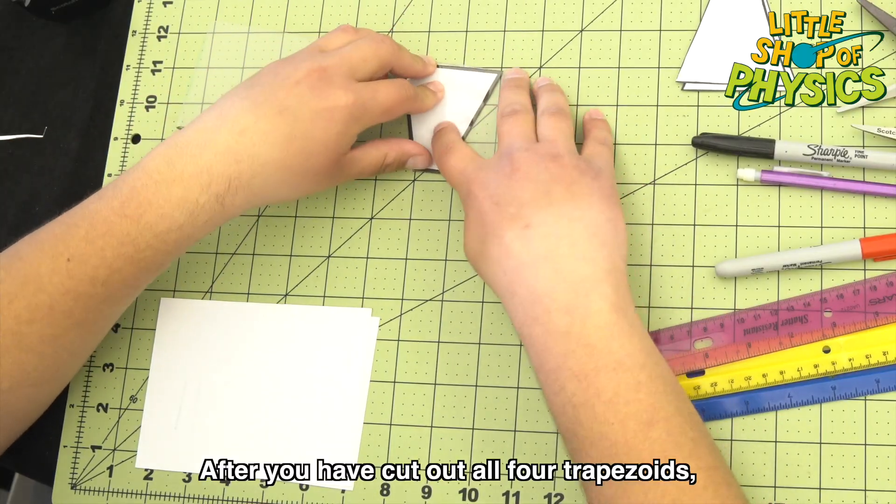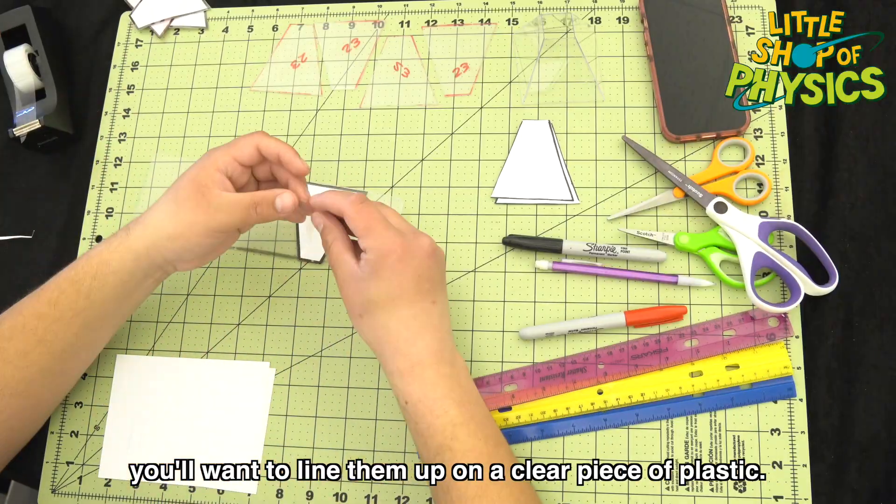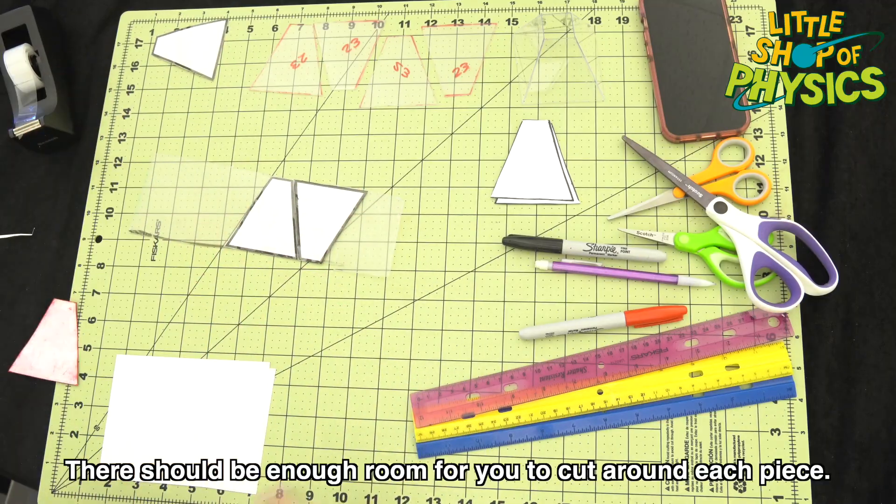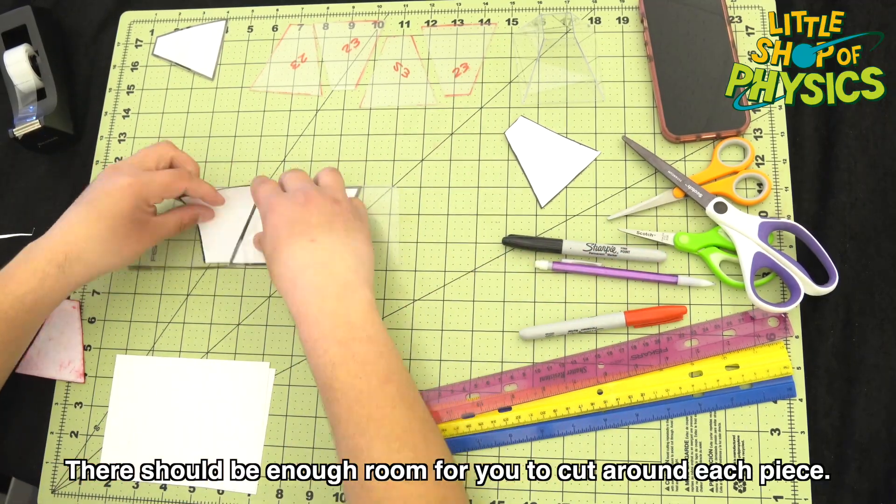After you have cut out all four trapezoids, you'll want to line them up on a clear piece of plastic. There should be enough room for you to cut around each piece.